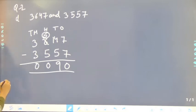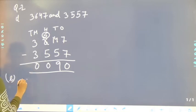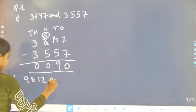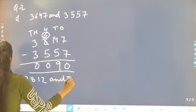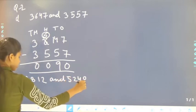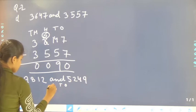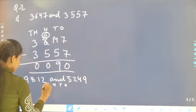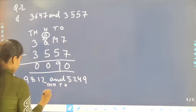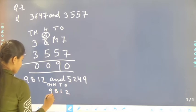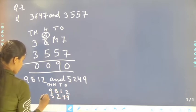Now move to the next part, that is E — 9,812 and 5,249. Again we have to write ones, tens, hundreds, thousands. Then we write 5,249 below.